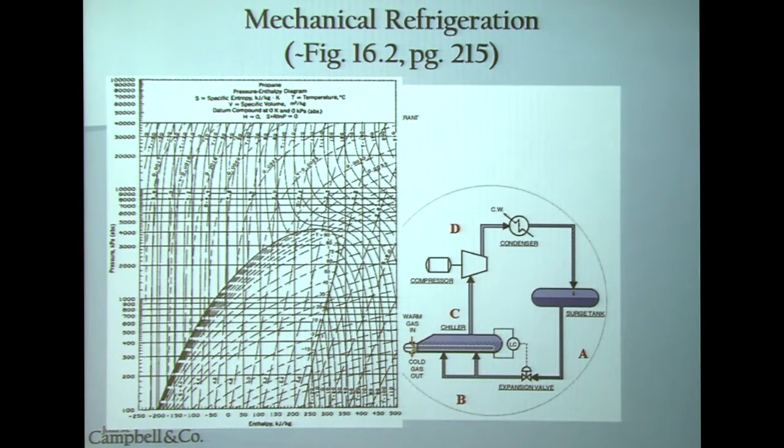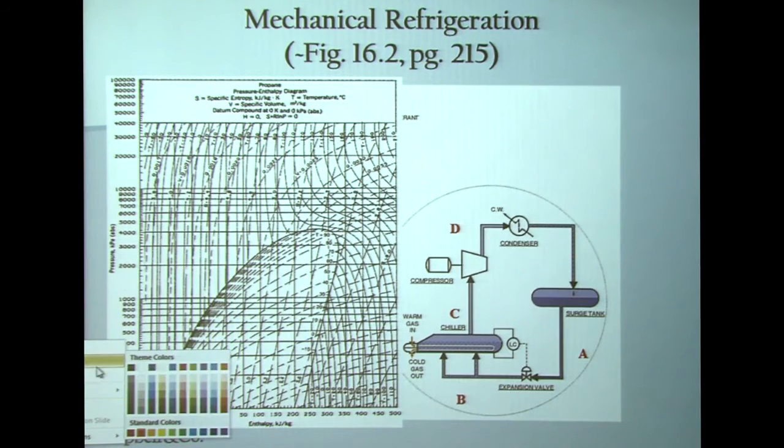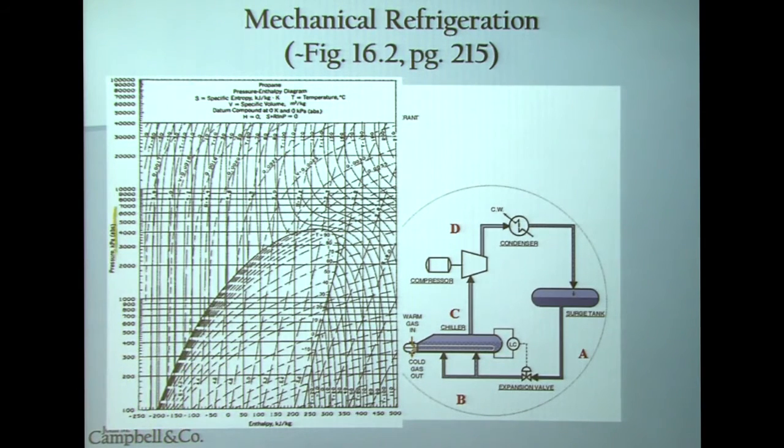We would have discussed the pressure enthalpy diagram way back in energy changes. But to give you a review, a very quick review of a pH diagram: what you're doing is you are plotting pressure versus specific enthalpy on a diagram. And this pH diagram is specific for propane. So, knowing that we are dealing with a pH diagram, what we're going to do is take the refrigeration system that we see in the circle over here, and we are going to locate those letters on a pH diagram to help explain how a simple mechanical refrigeration system works.